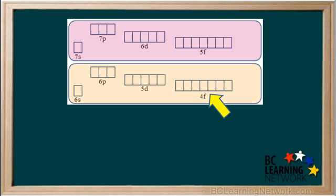If we have a look at the top two groups of orbitals on the electron energy level diagram, we see that there's a group of 7 orbitals called the 4f orbitals and another group of 7 orbitals called the 5f orbitals.